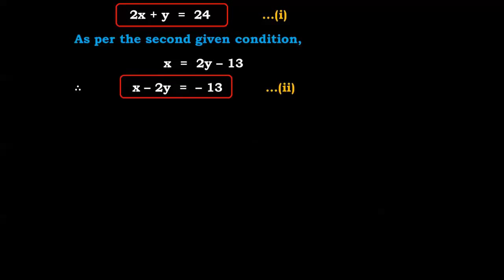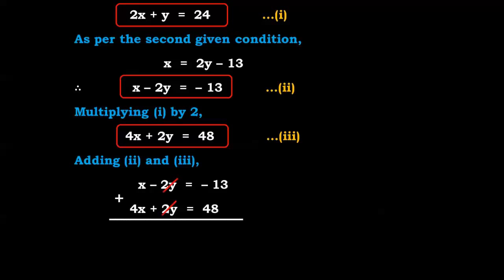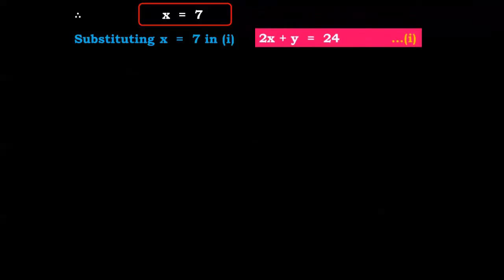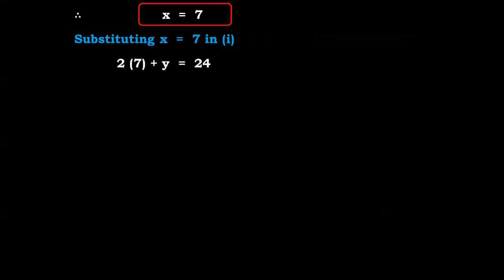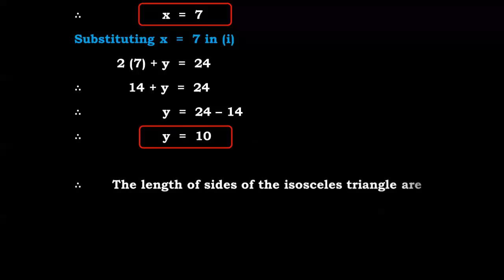To solve equations 1 and 2, multiply equation 1 by 2: 4x + 2y = 48, equation 3. Adding equations 2 and 3: x - 2y + 4x + 2y = -13 + 48, so 5x = 35, therefore x = 7. Substituting x = 7 in equation 1: 14 + y = 24, so y = 10.